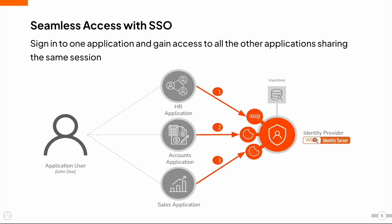The solution for these concerns is to introduce an identity provider system. The identity provider can connect to the organization's user store and authenticate the users on behalf of the application. When a user tries to access the first application, the application delegates the login process to the identity provider. As there is no logged-in session for the user, the identity provider prompts the user for credentials that will prove his or her digital identity. Once the user enters and submits the credentials, they are validated, a logged-in session is created, and the user is allowed access to the application.